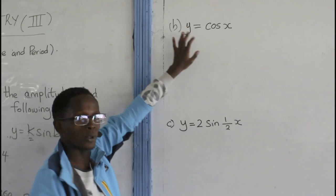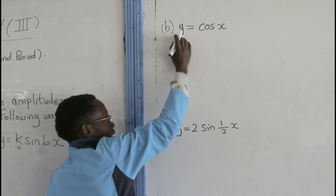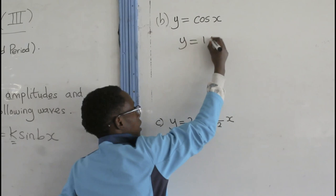Going to our second example, Y equals to cos x. So, there is one thing I want you to know. This equation is the same as Y equals to 1 cos 1 x.